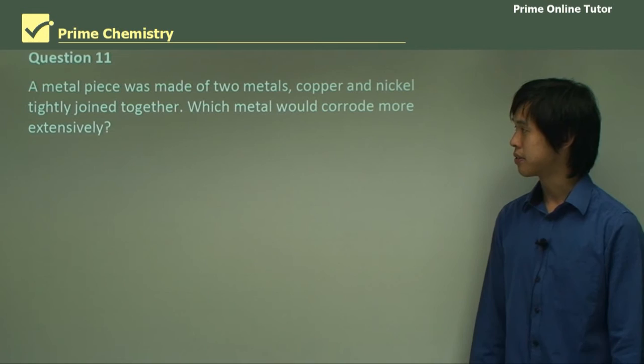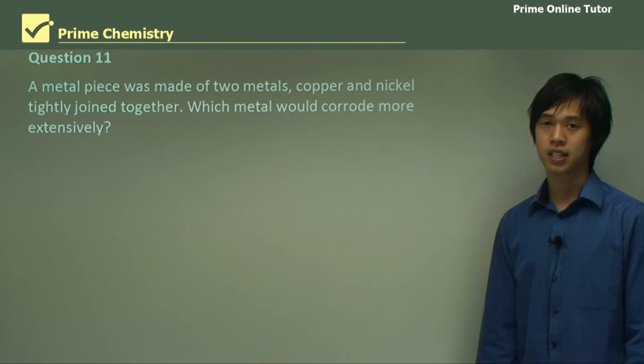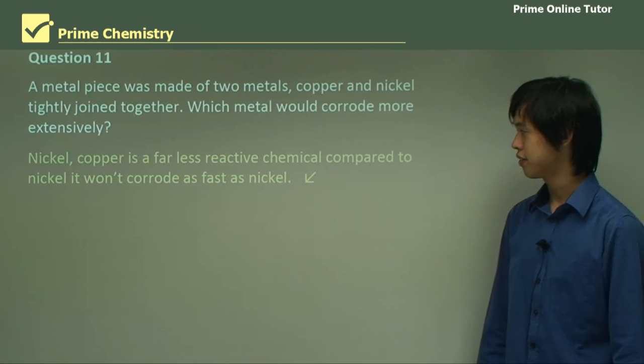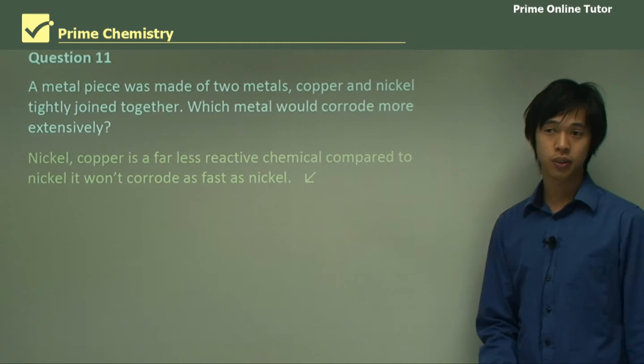A metal piece was made of two metals — copper and nickel — tightly joined together. Which metal would corrode more extensively? The answer is nickel. Copper is far less reactive compared to nickel, so it won't corrode as fast. In the future, we're going to look at cathodic protection, and this is essentially the basis of cathodic protection.